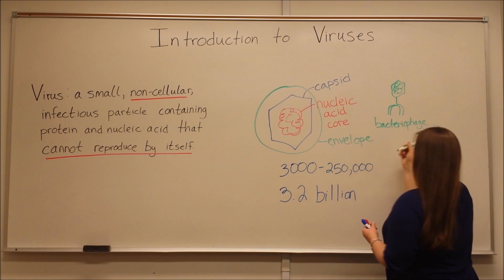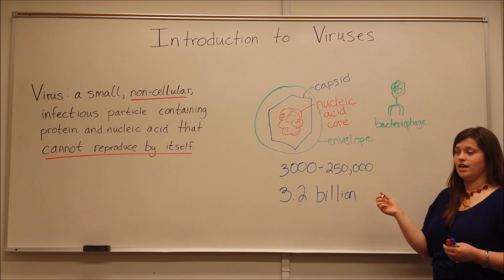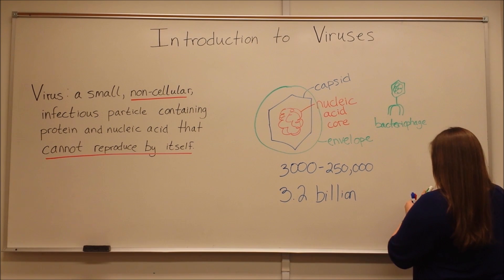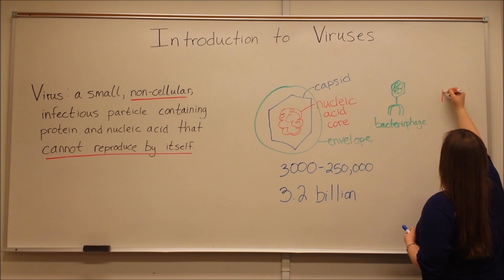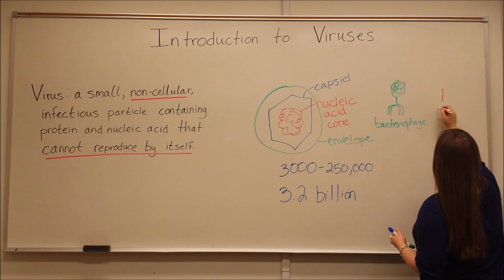If you'd like more information on how the bacteriophage works, you can see my video on transduction. There is also tobacco mosaic virus. Tobacco mosaic virus is quite small, and it is elongated. Of course, this is the virus that infects the tobacco plant.